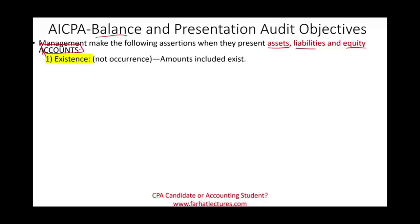Existence: we don't use the word occurrence for account balances; we use existence, because occurrence is for transactions. Is the amount included actually existing? For example, the assets — they're claiming they have three, five, or ten million dollars worth of buildings. Do those buildings actually exist? They have a balance for trucks as an asset — does it actually exist? Are they real?